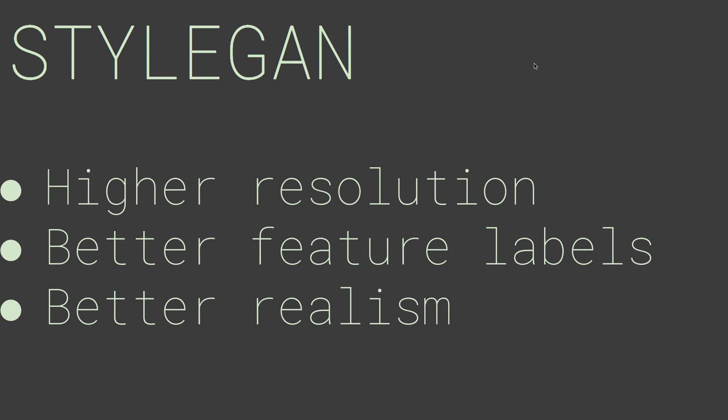StyleGAN also works with better feature labels — basically a way of saying I know what this thing is doing. For example, smile or no smile, glasses or no glasses, facial hair or no facial hair, black hair or brown hair. Combining those top two features gives a much more realistic image, especially with faces. Another interesting possibility is taking two faces and adding them together — like a woman with blonde hair and a guy with black hair and glasses — and getting a woman with glasses and black hair.